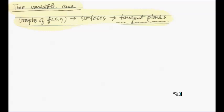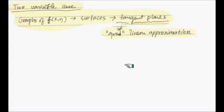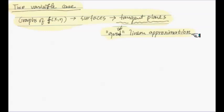Now let's look at the two-variable case. Let's think about the shape of graphs of two-variable functions. Because it's two variables, the shapes are surfaces rather than curves. So the correct analog for the tangent line will be a tangent plane. Whatever that means, we're going to use that as a good linear approximation. If we have the function f(x, y), this tangent plane will turn out to be a good linear approximation of f(x, y) values around whatever point we fix, such as (a, b). Then any function that has this tangent plane as a good linear approximation should be called differentiable.